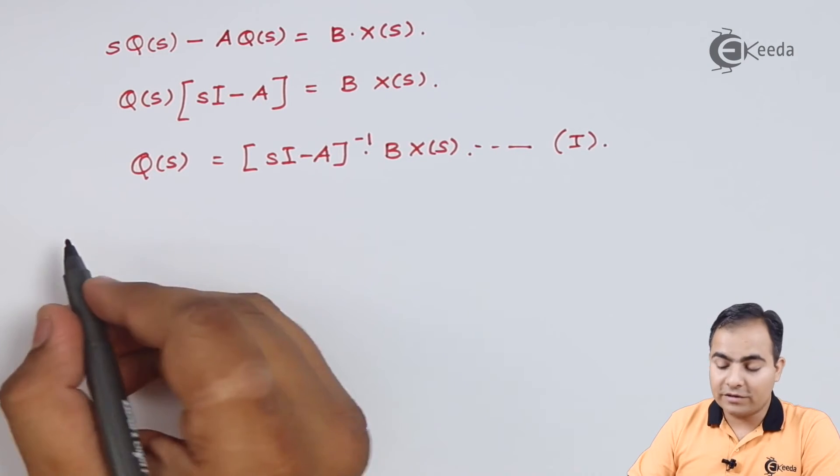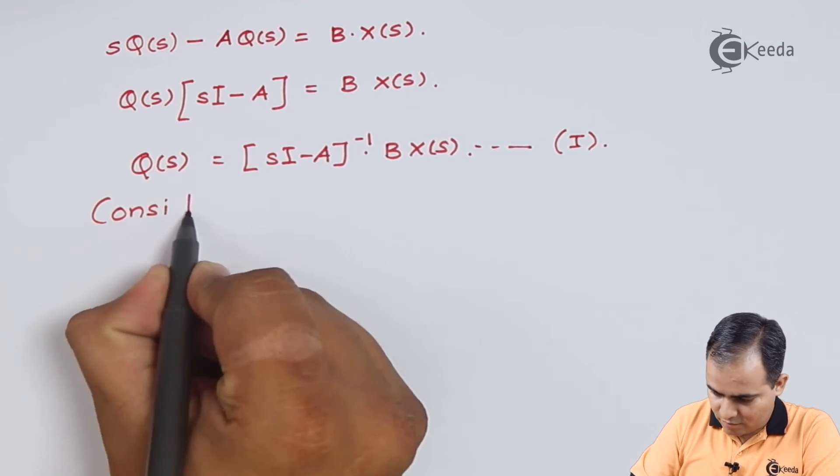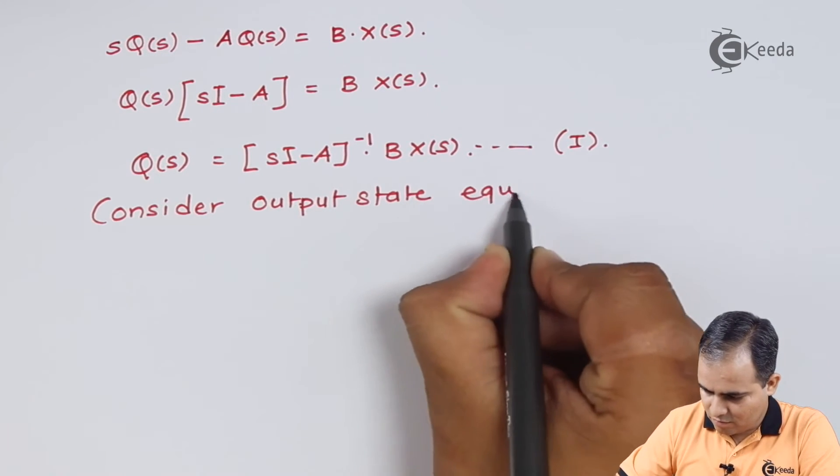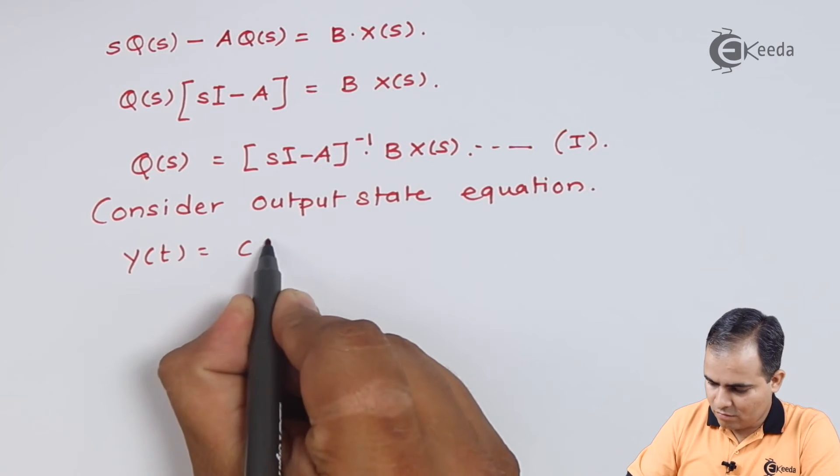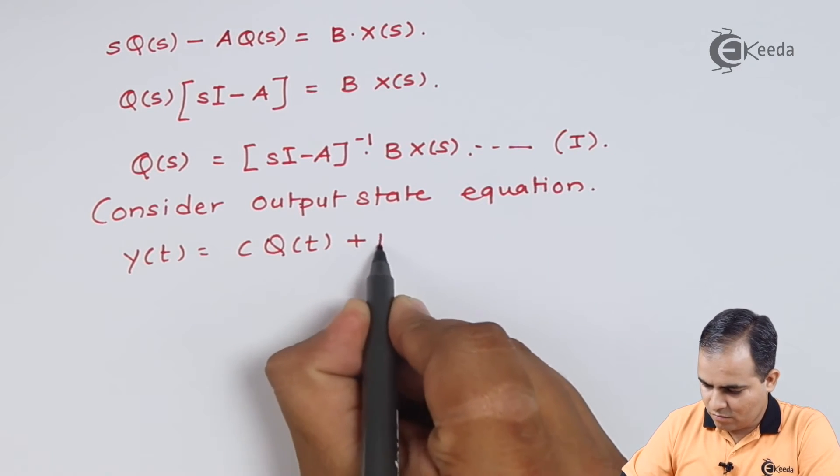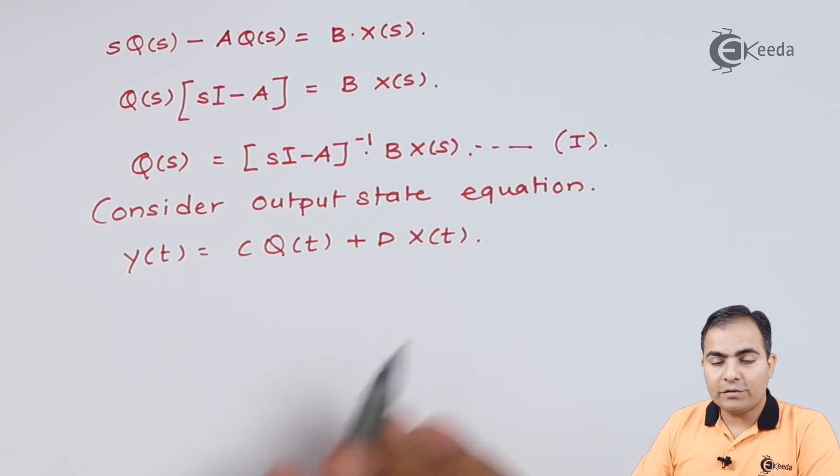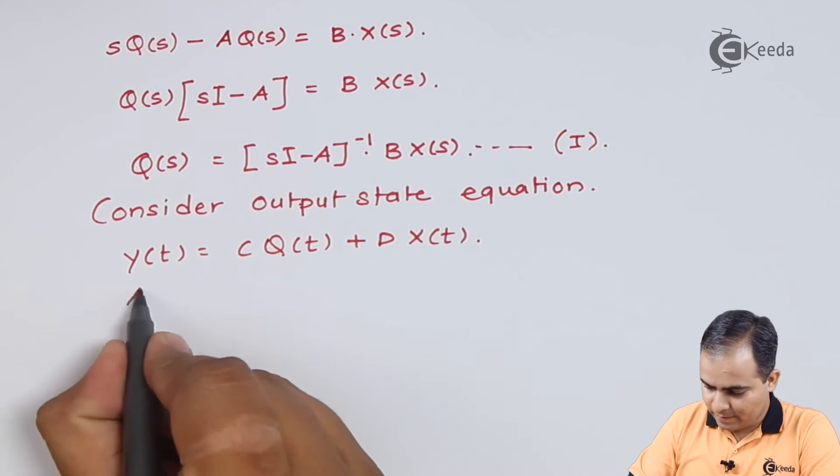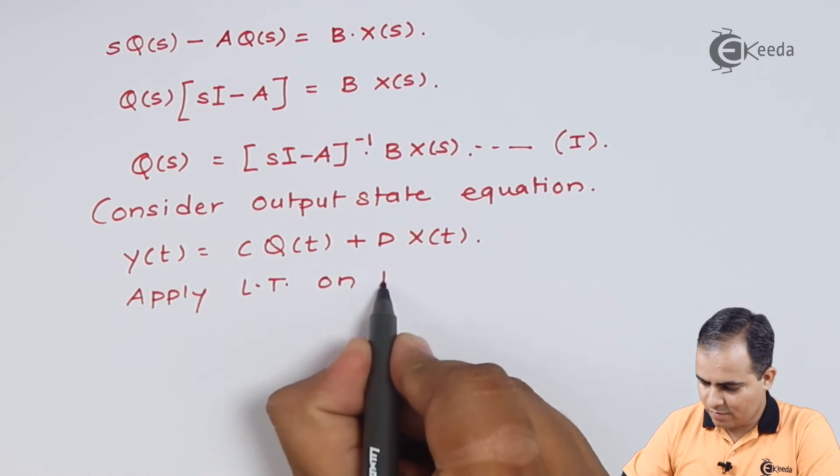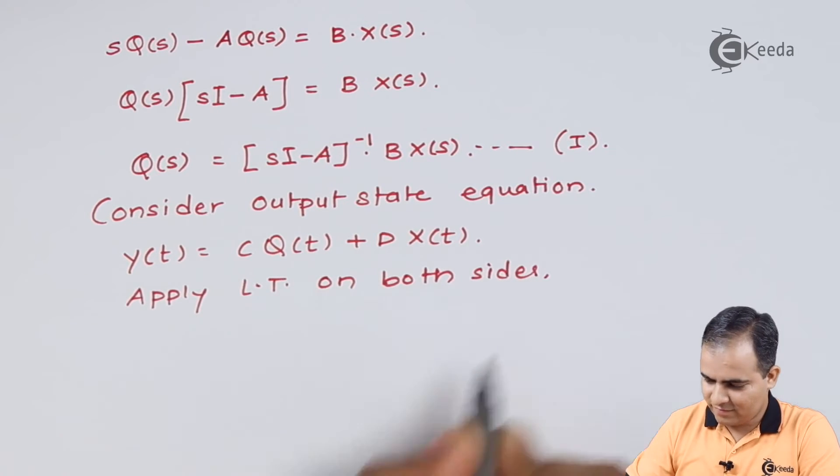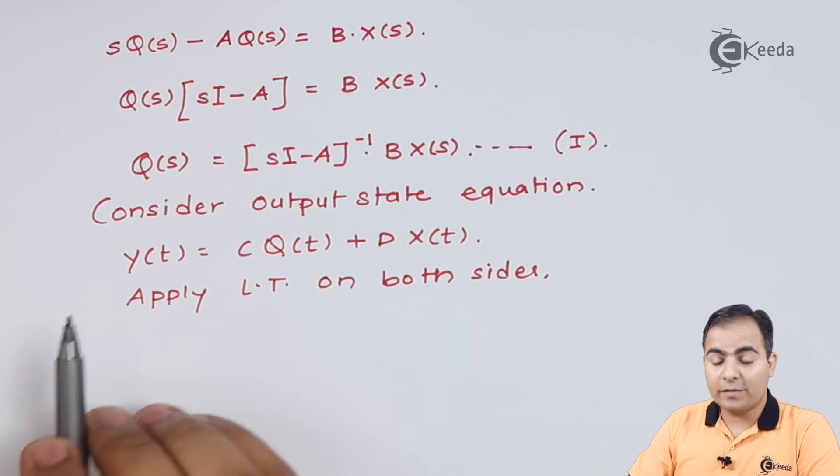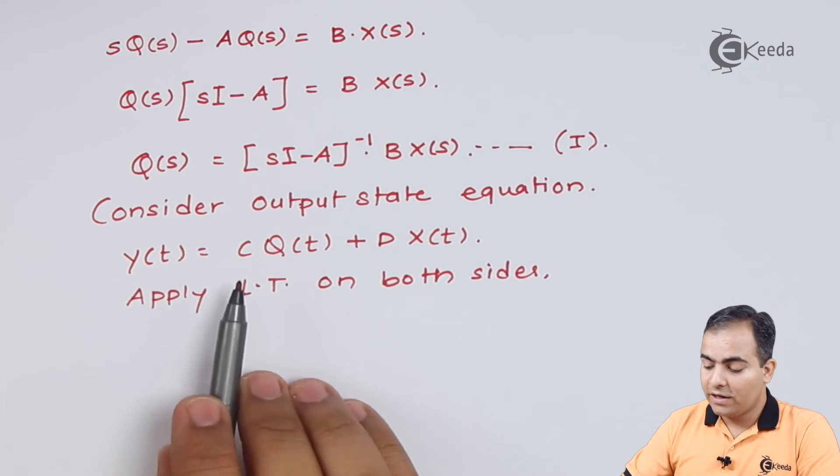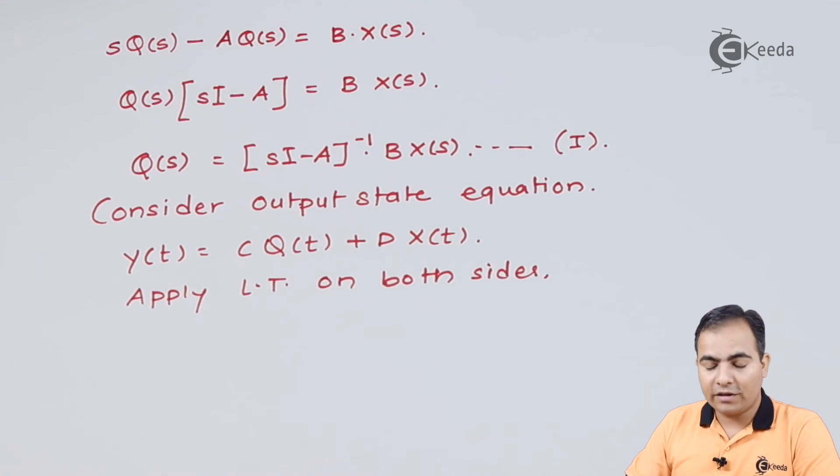Now consider the output equation or output state equation. Now on this equation also we will apply a Laplace transform but on both the sides. Now Laplace transform Y of T is represented by Y of s whereas Q of T is replaced by Q of s and X of T is replaced by X of s and my C and D both are a constant.